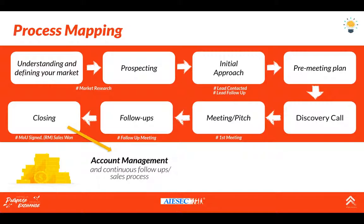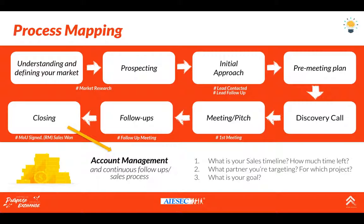After the meeting, you follow up, and lastly close your sales. That's the first part of the sales funnel. The second part is account management. Before you start the entire process, ask yourself: what is your sales timeline, how much time do you have left, and what partner are you targeting? In PD for IGV, you have financial partners, OP, LP, and schools. Also look into how you can be more project-driven — which project needs which partner, and how many partners you need for each project. Then look at your overall goal before going into the process itself.